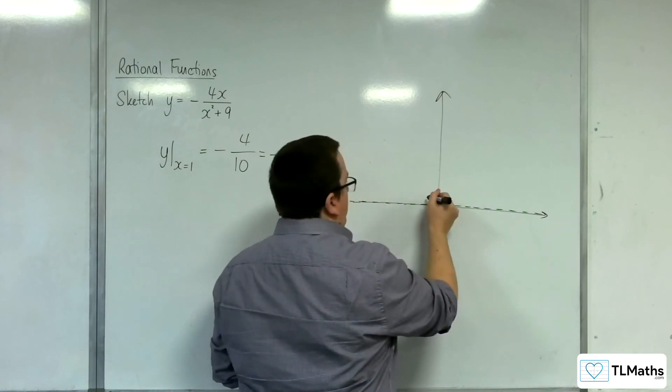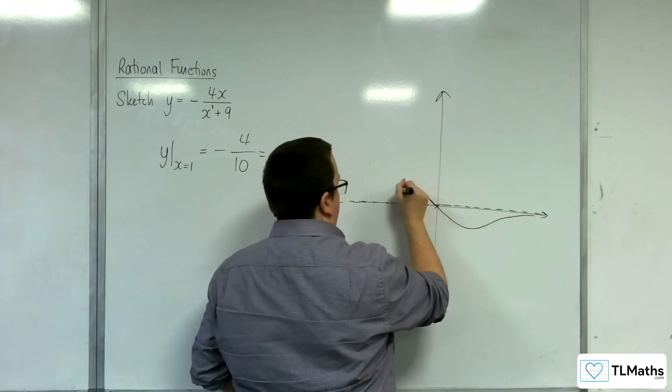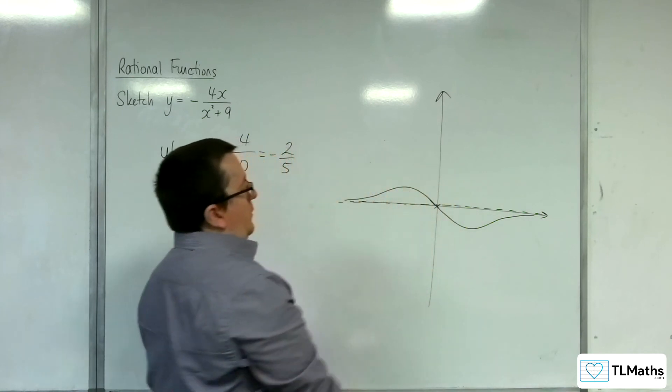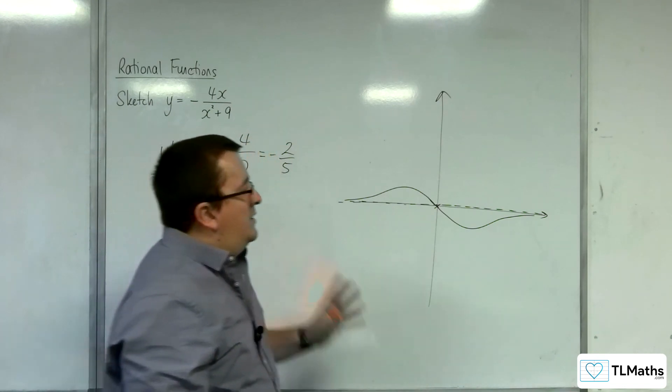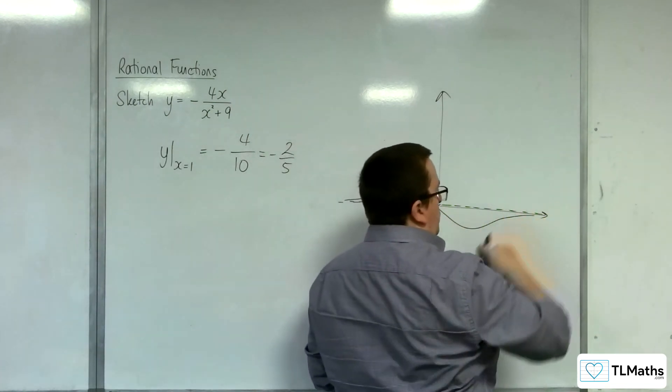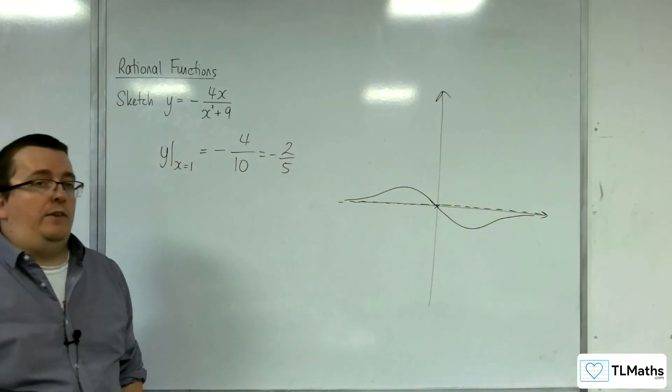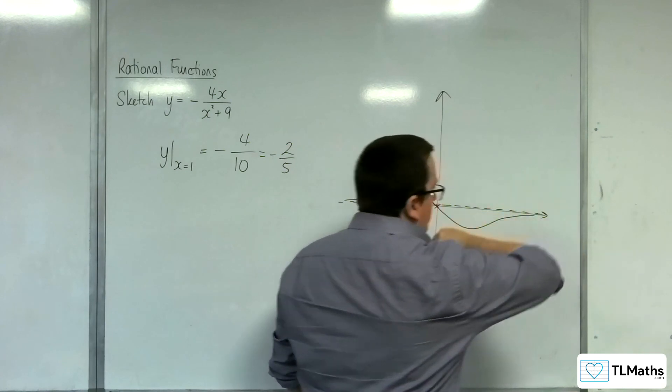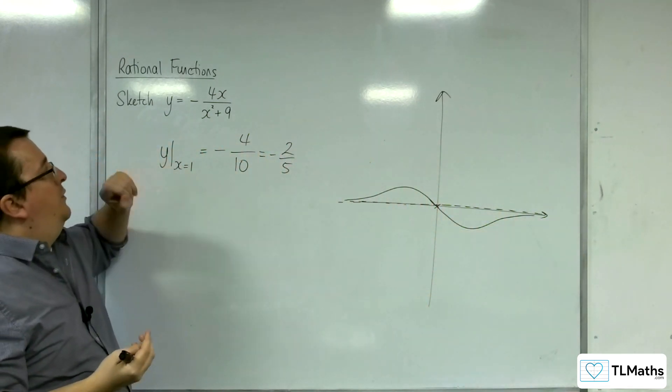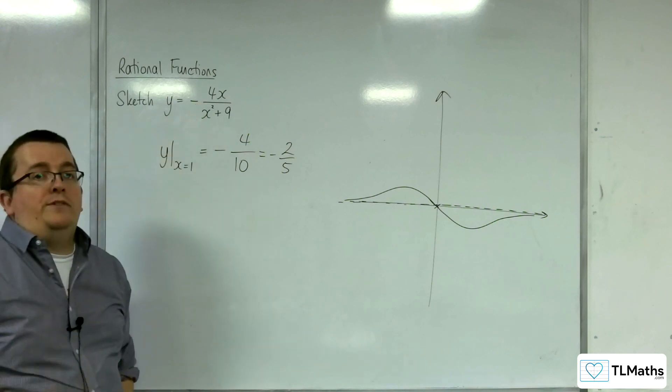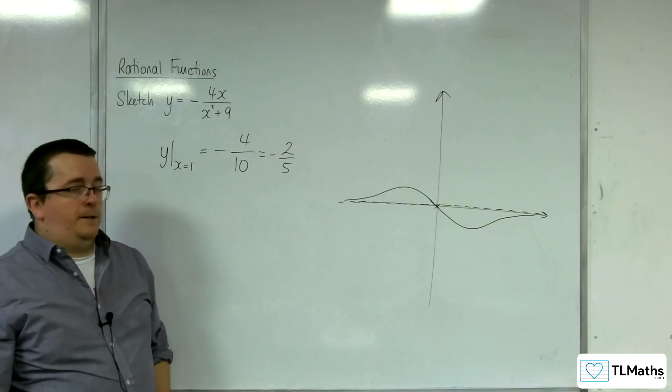And it'll look something like that. We know that it's got to come back and tend towards that x-axis. And we know it can't cross the x-axis again. So we can't come back and then that way because it's only crossing through the x-axis once when x is 0, y is 0. So that is what the shape of the curve must look like.